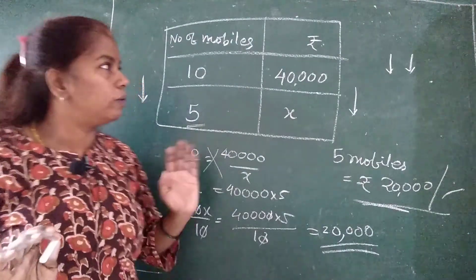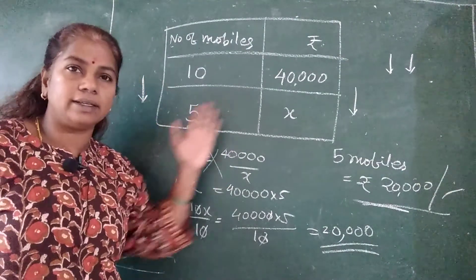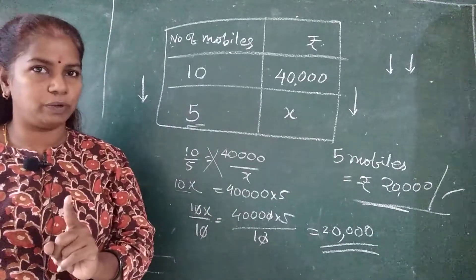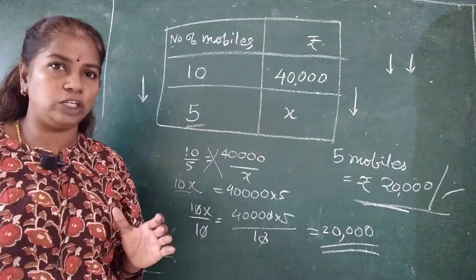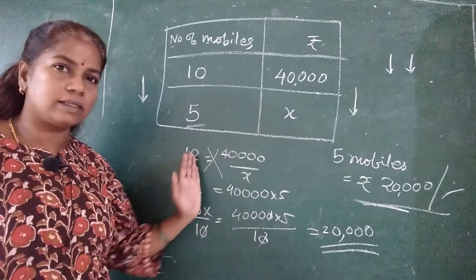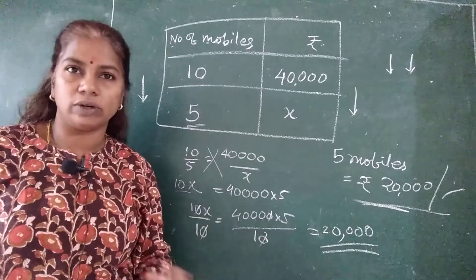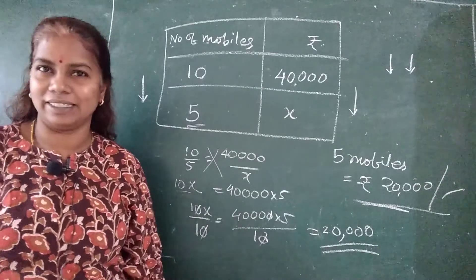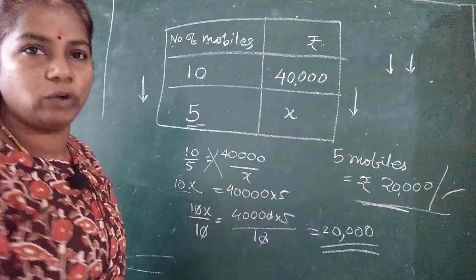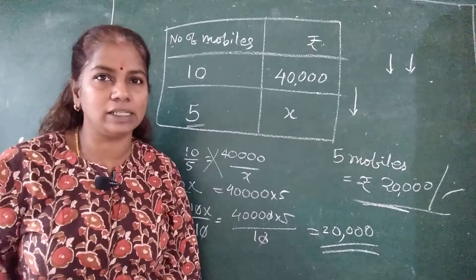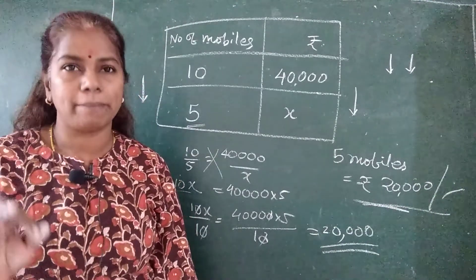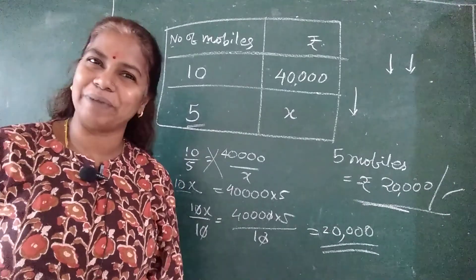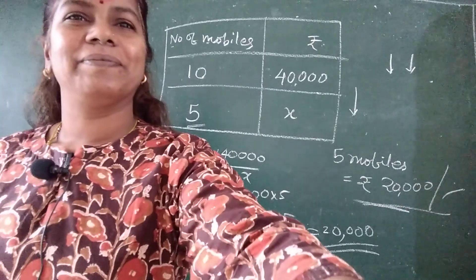The quantity decreased, so the rate also decreased — same direction, so it is direct proportion. For direct proportion: write as it is, do cross multiplication, then cancellation, and you get the answer. Children, practice — maths needs practice. I will create questions in a Google form, upload it, and you can practice it. Take care of yourself. Bye.